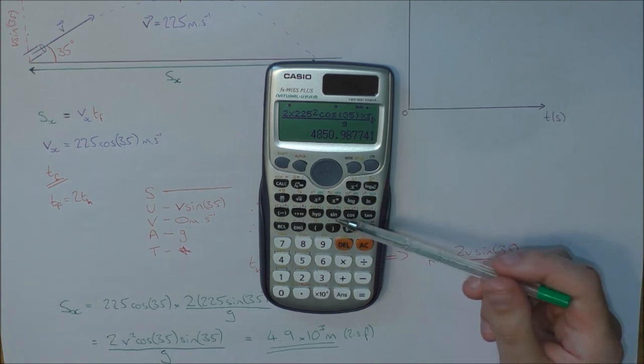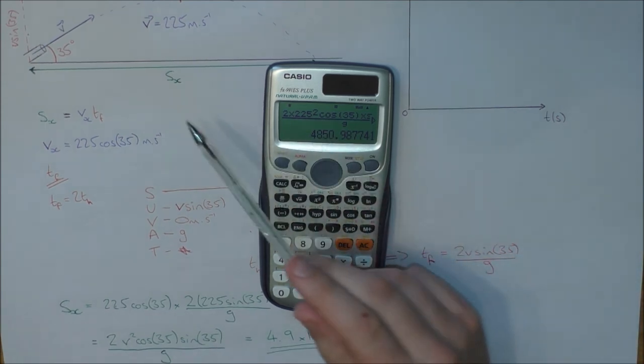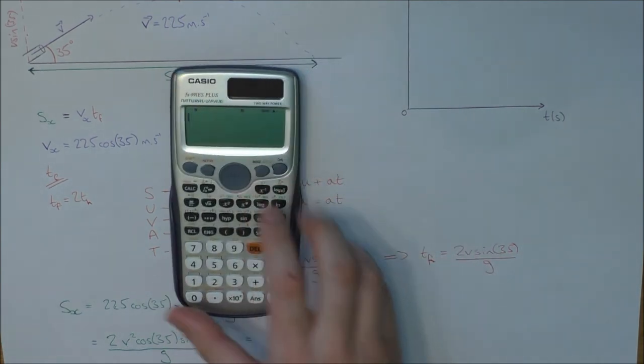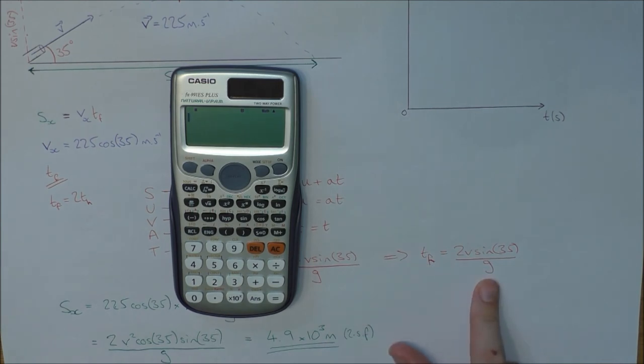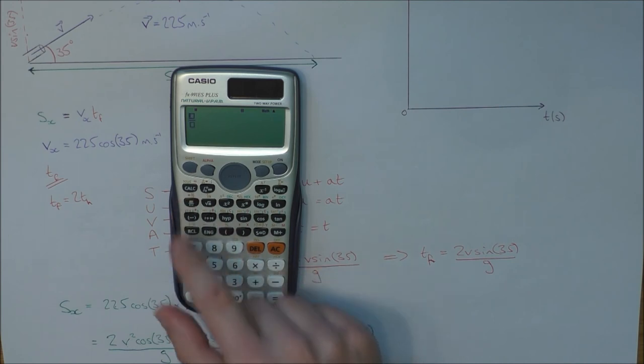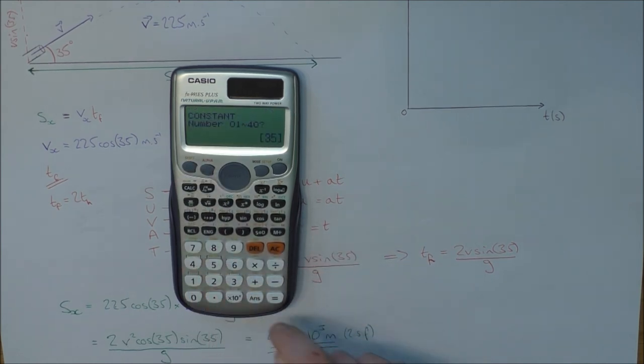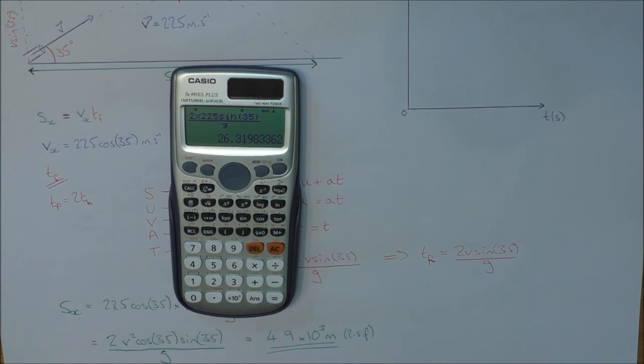Now, just having to think about this: does that sound about right? I can have a quick check. I had this for T_F, so I can do a quick check on that. 2 times 225 sine 35 all over little g. It's going to equal 26 seconds.